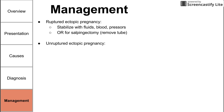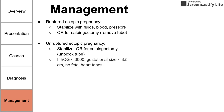If you have an unruptured ectopic pregnancy, you have additional options. You can still take the patient to the OR, or you could treat with medication. In the OR, you can perform a salpingectomy — removing the tube — or a salpingostomy, which is an unblocking of the tube that attempts to preserve fertility.